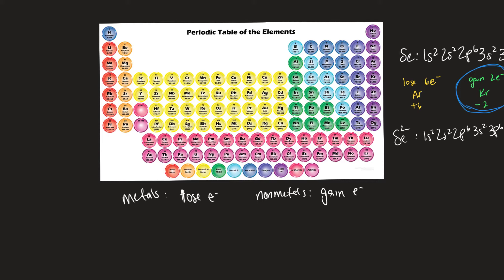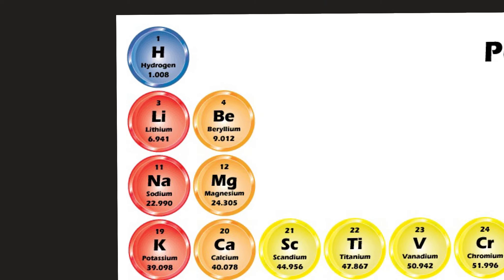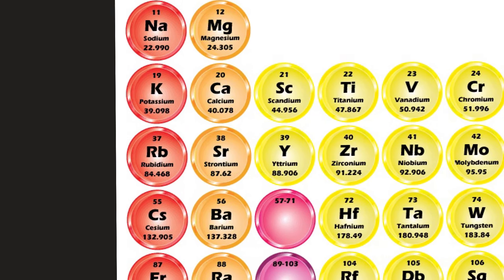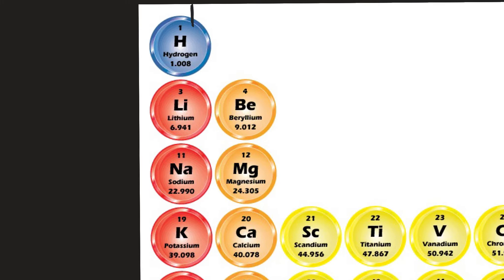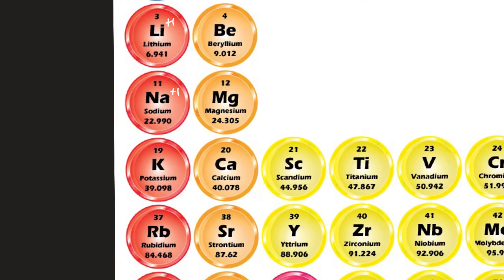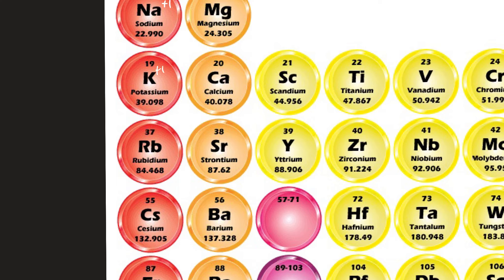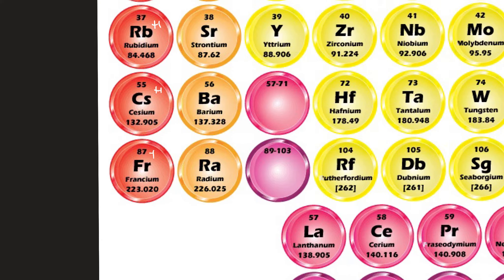Depending on the group, you can easily identify the charge of those atoms. All the alkali metals — lithium, sodium, potassium, rubidium, cesium, francium — all have one valence electron, so they all lose one electron and become a plus-one charge when they become ions.